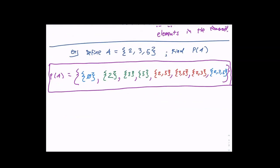The furthest we're going to go is a set of four elements. You do have a homework problem — the hardest one uses letters, so instead of {2, 3, 5} your homework uses {A, B, C}. You would just replace the twos with A, threes with B, and fives with C to get the right answer.